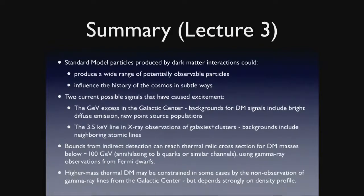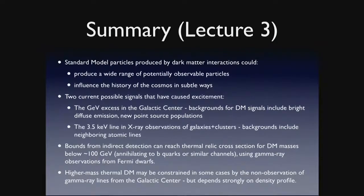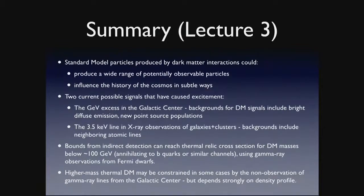The point I want to make is just: if dark matter annihilates or decays, it provides a source of heating and ionization that occurs everywhere in the universe over the whole age of the universe. It could also modify nucleosynthesis, modify reionization, and could play a role in most of the special epochs from the cosmology talks. Standard model particles produced by dark matter interactions could give you a wide range of observable signals and could modify the cosmic history in interesting ways. There are a couple of current possible signals that have caused excitement in the field, though one is probably telling us about a new point source population rather than dark matter annihilation.